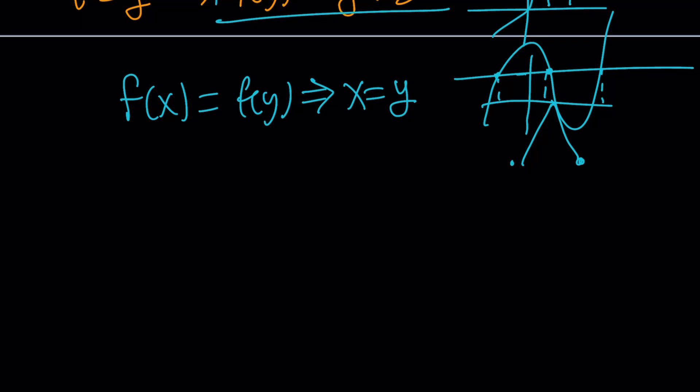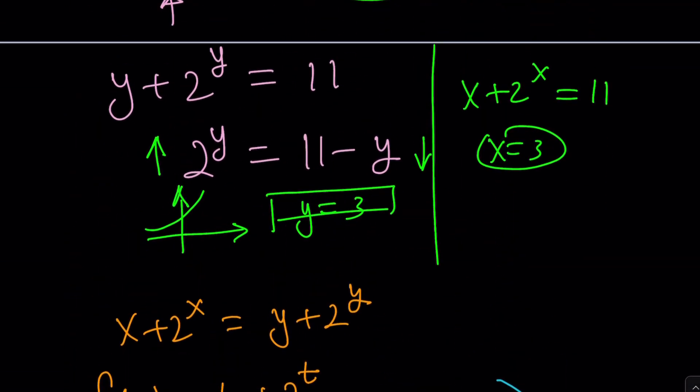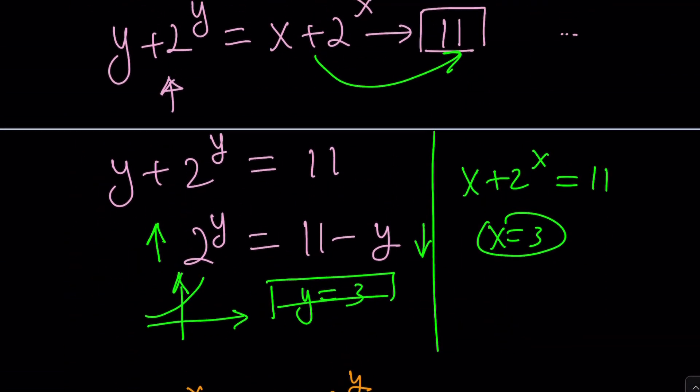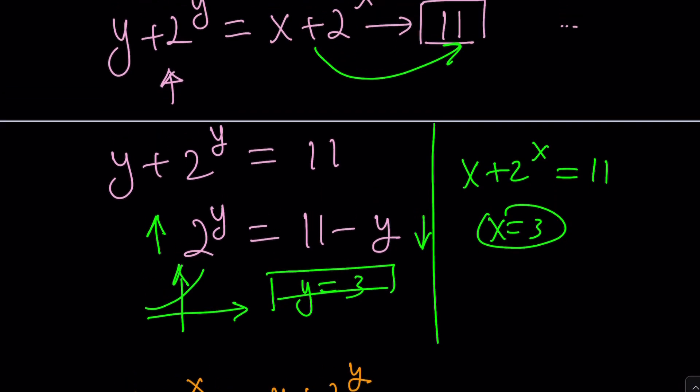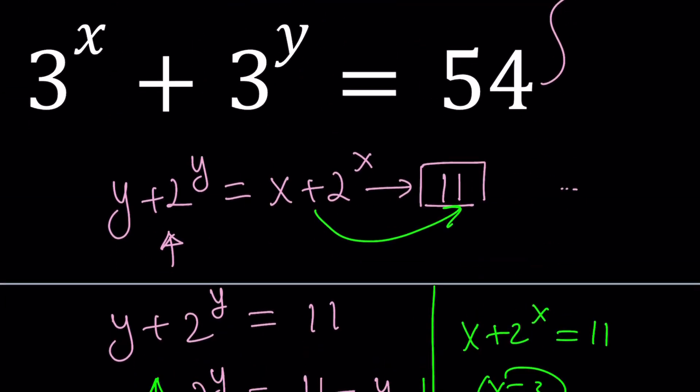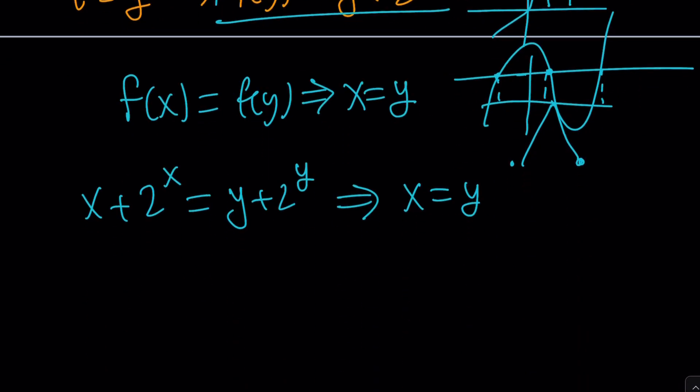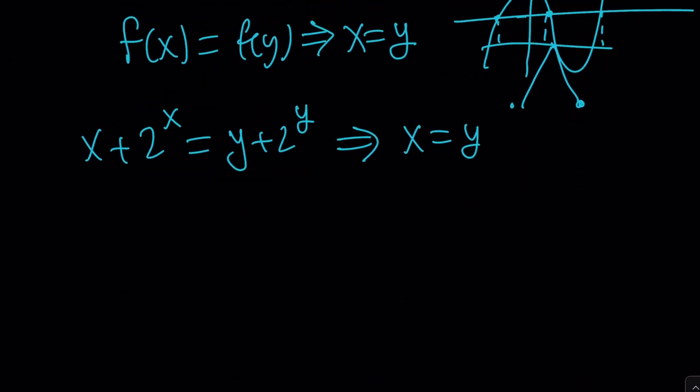This implies that x = y. So from x + 2^x = y + 2^y, we ended up with x = y. This is great. We actually kind of found it, but only for particular values of x. I don't know why I picked 11, but that just gave away the solution. But anyways, that's okay. I guess I picked an easier one.